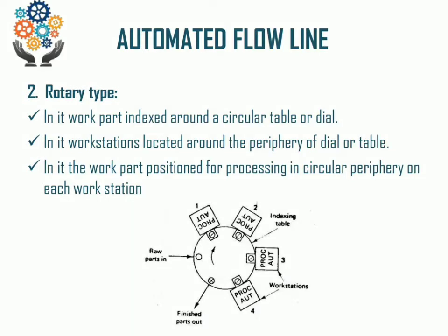The next is the rotary type of Automated Flow Line, in which the work part is indexed around a circular table or a dial. Work stations are located around the periphery of the dial or table, and all machine tools are arranged along this circular, dial-shaped table.